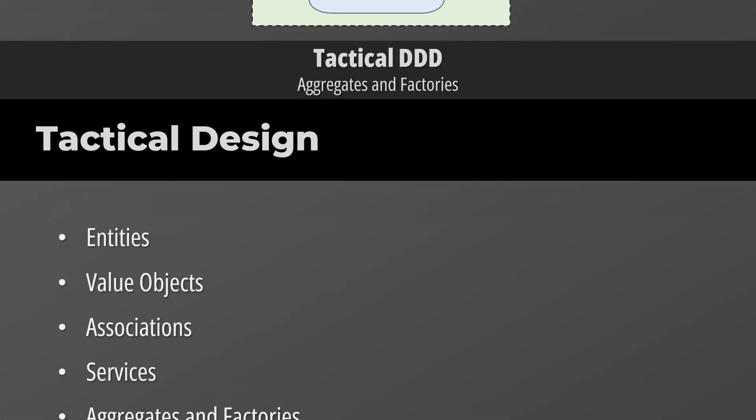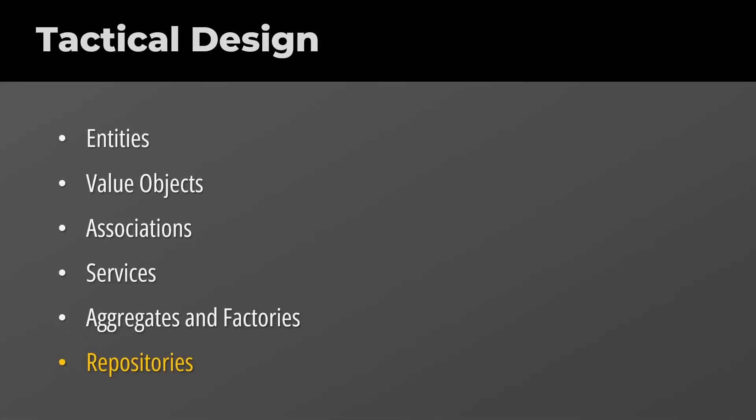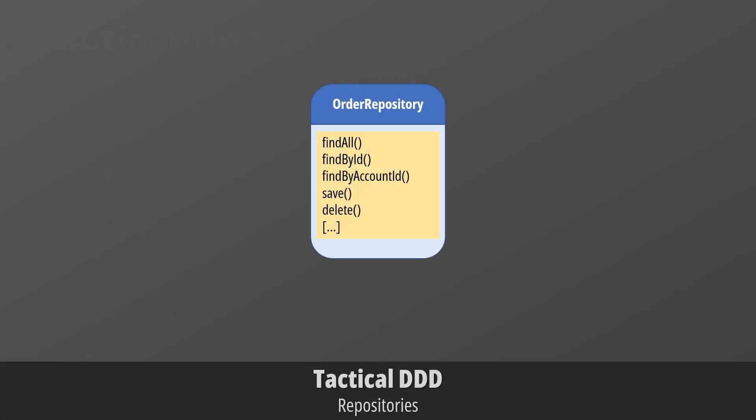Finally, we have repositories that are used to retrieve particular instances of our entities. Their main goal is to avoid crowding the entity with querying and persistence concerns, which should bloat it. We can create an order repository where we can fetch orders by address, account, or date range. And that's all for the tactical design.